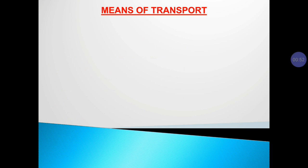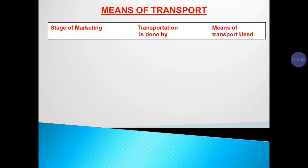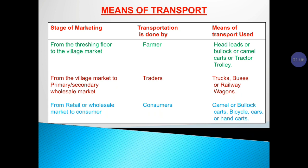Now we will understand means of transport. We will look into the stages of marketing. From the threshing floor to the village market, this stage is handled by the farmer, and the kind of transport used is head loads, bullock carts, camel carts, or tractor trolleys.